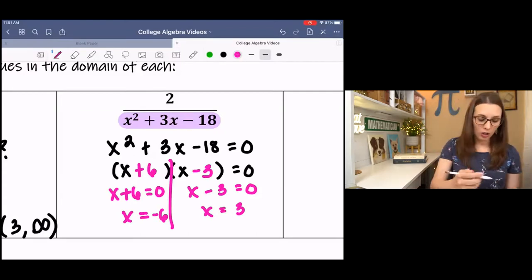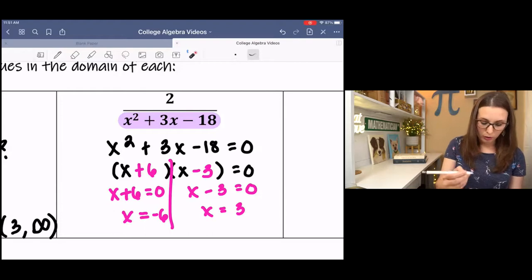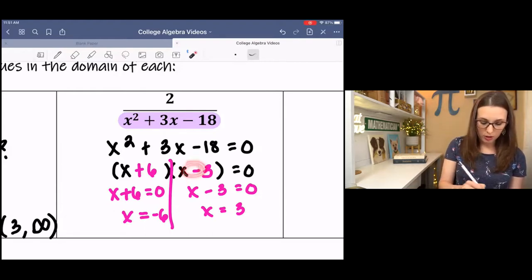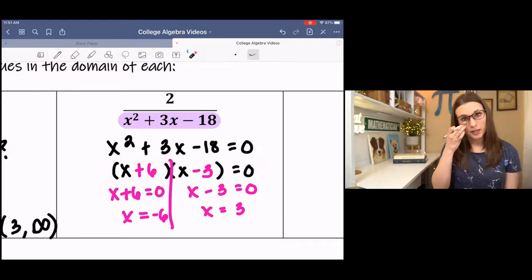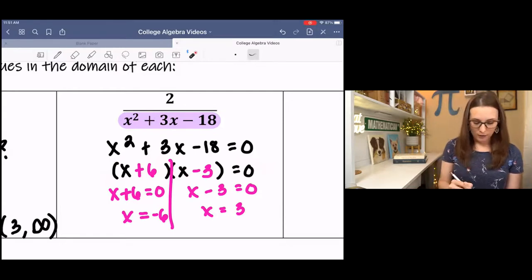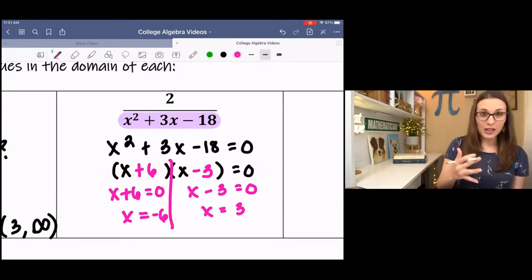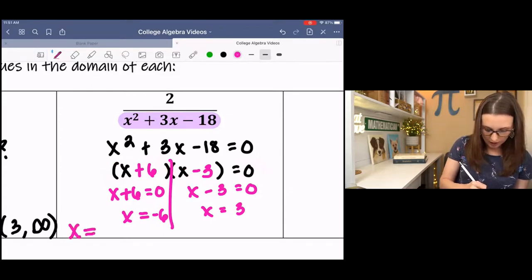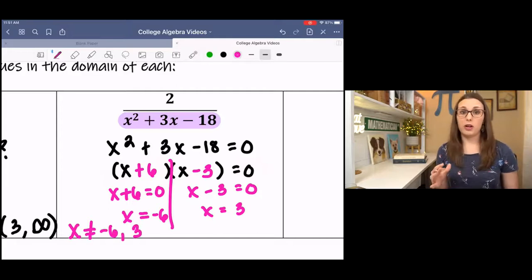These are the excluded values from my domain, because at either of those values, I'm going to get zero in the denominator. So if I plug in 3 here, 3 minus 3 is zero. Zero times this is zero, which makes it an excluded value because it makes the function undefined. Same for negative 6. So if it's asking for excluded values, we would say x cannot equal negative 6 or 3, and that would be our answer.